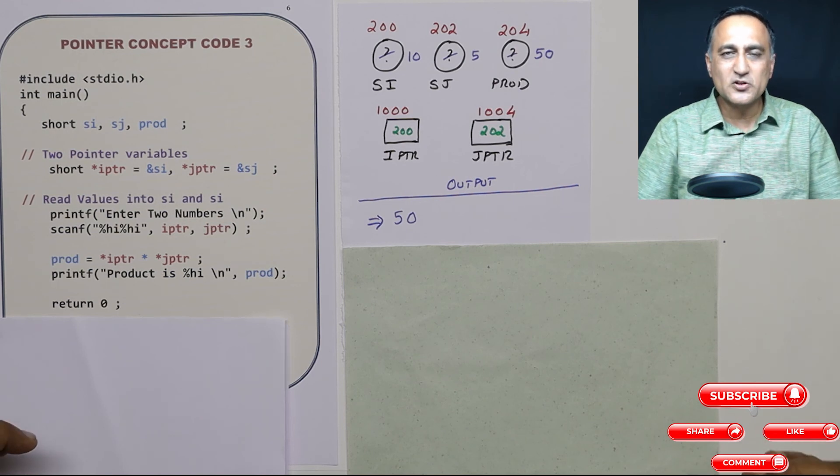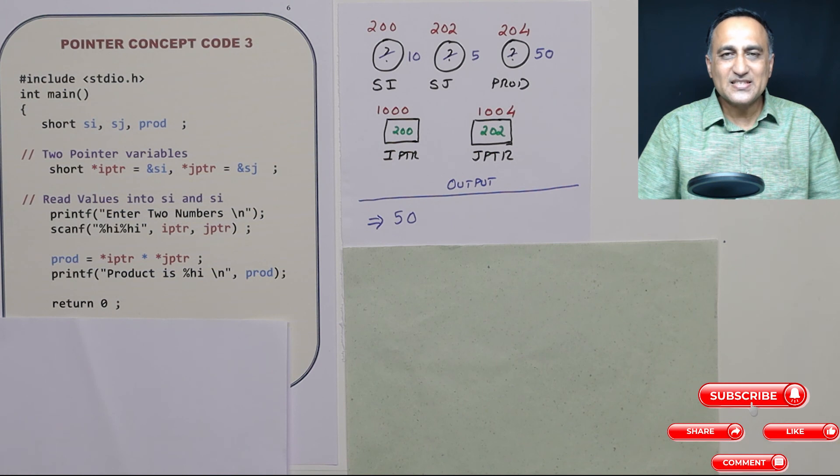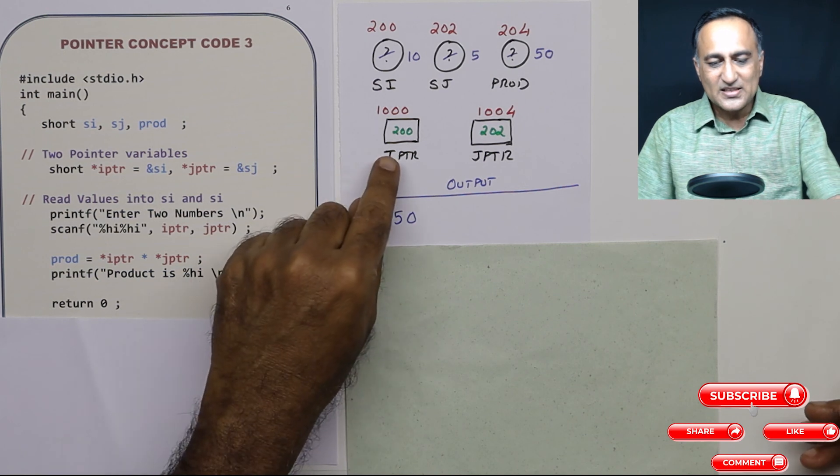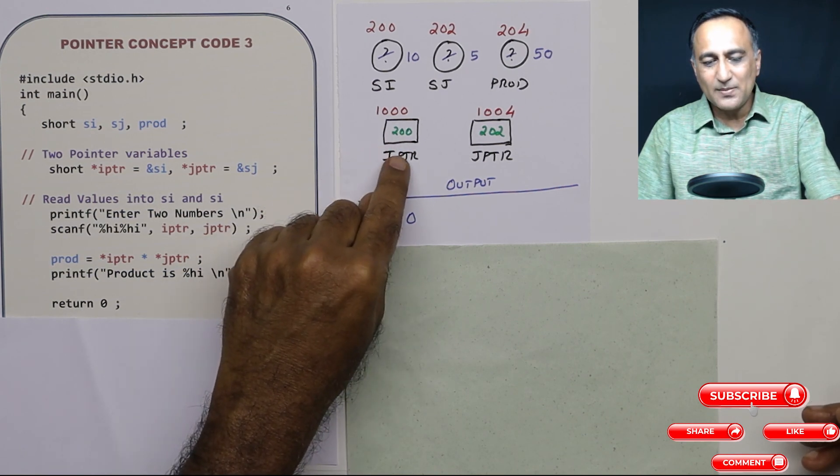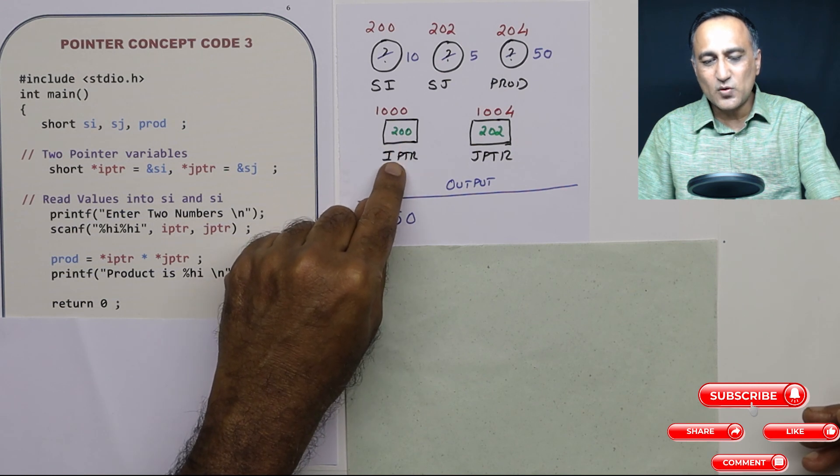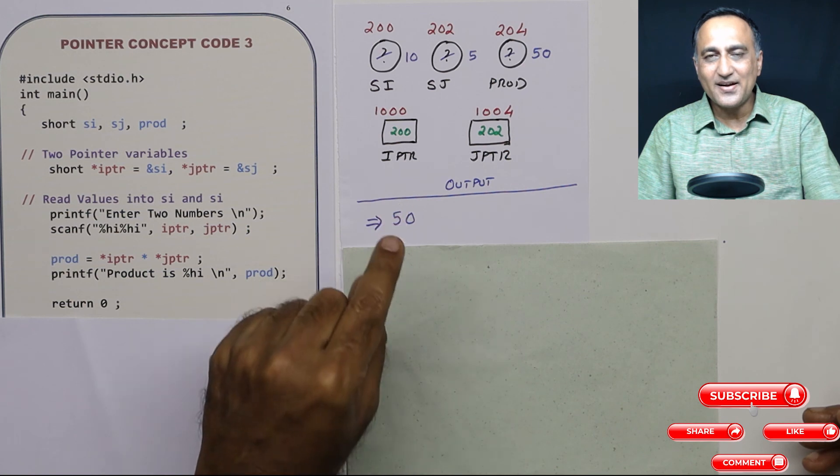We'll be doing a few more programs to reinforce, but the whole thing you really need to understand is star means give me the content at that particular address. Since IPTR contains an address, if I attach star with IPTR, IPTR is replaced with 200, star 200 is value at or content at address 200.